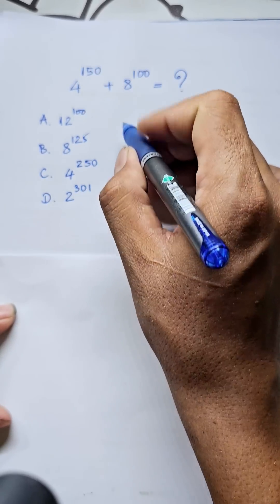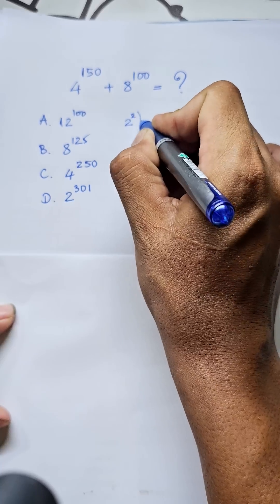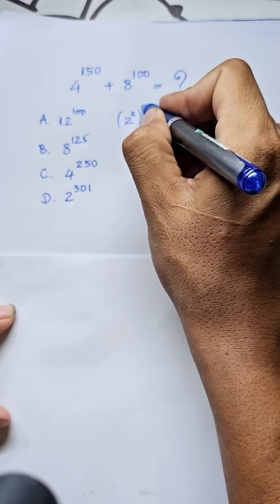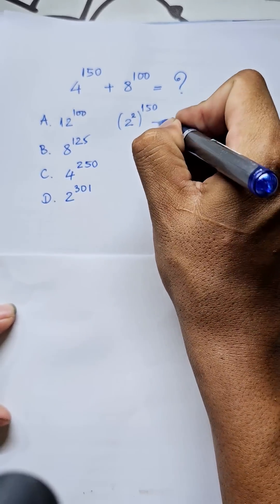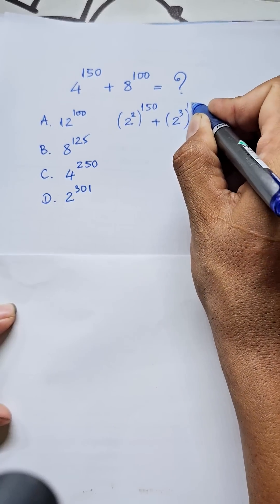We can write 4 as 2 squared, so this becomes (2^2)^150. Plus here, 8 can be written as 2^3, so this becomes (2^3)^100.